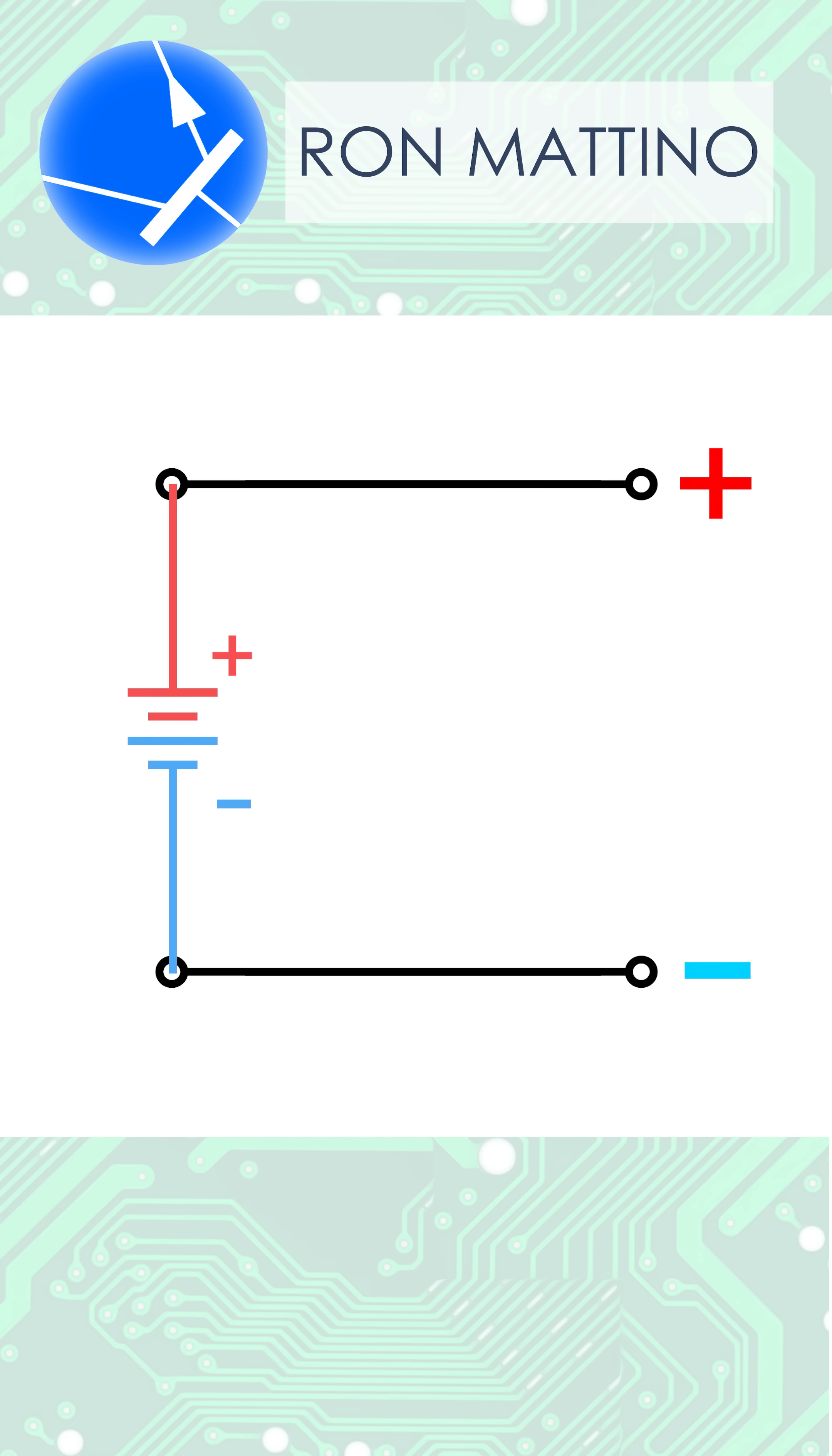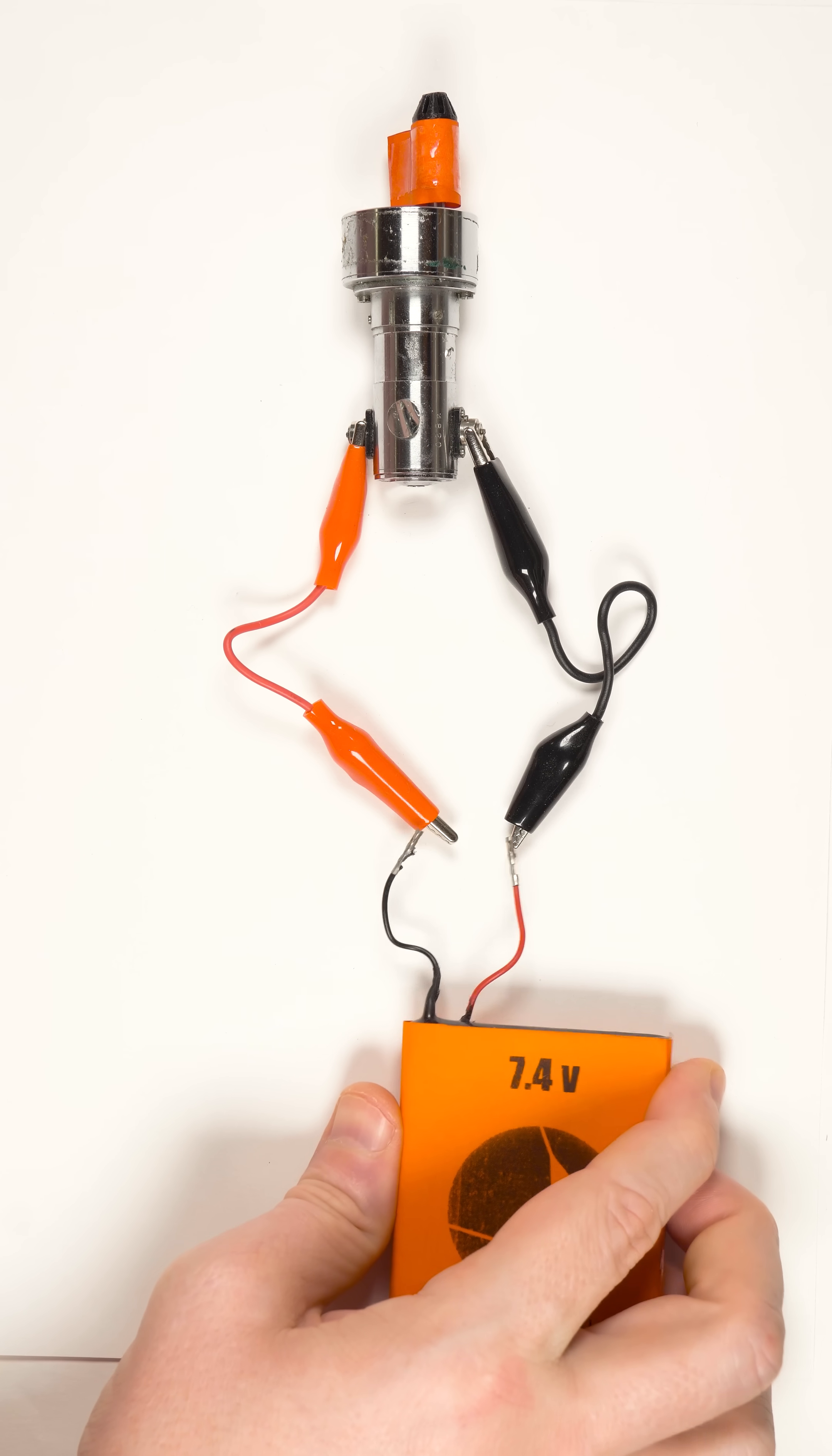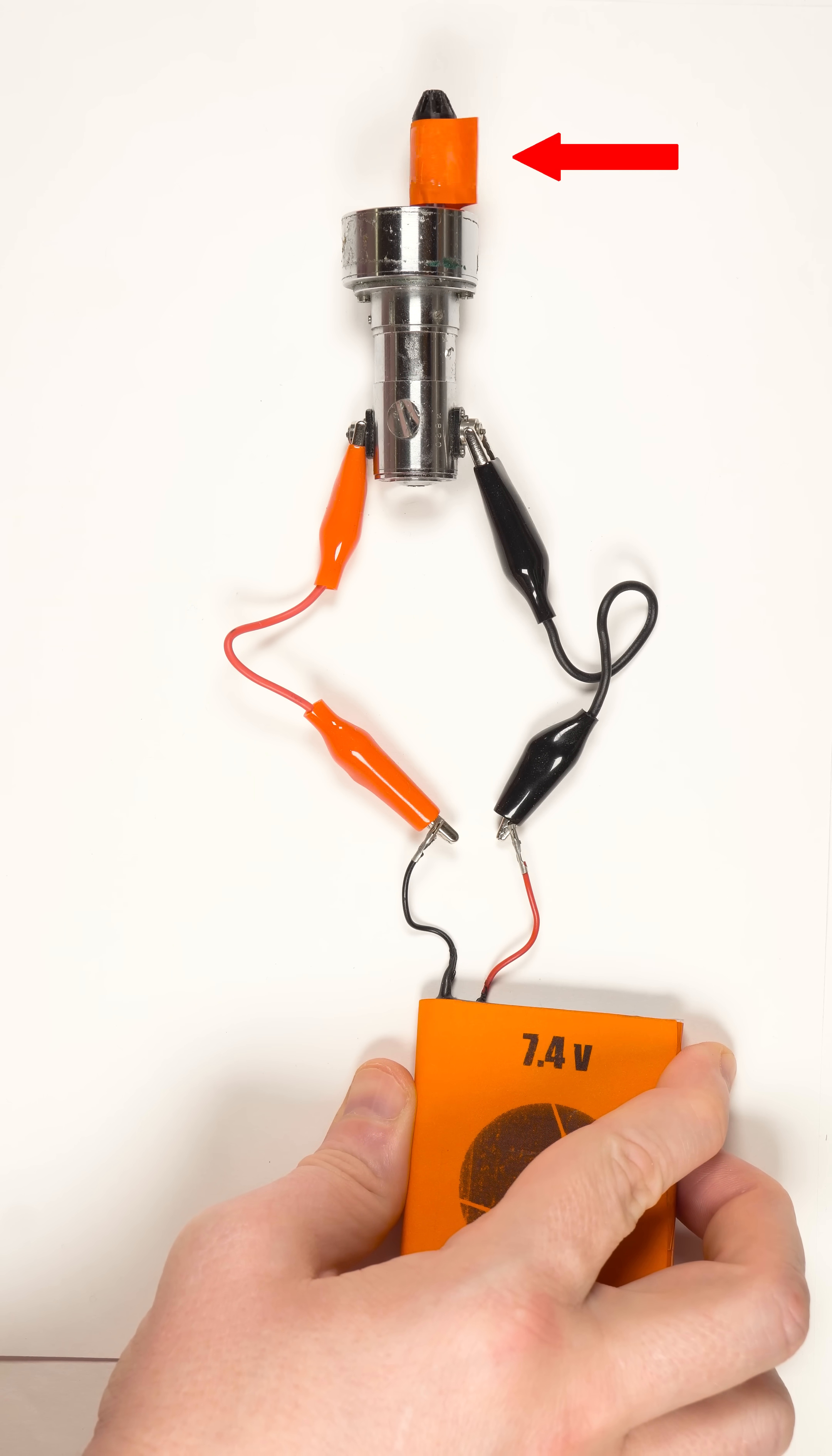We can imitate AC by manually swapping the positive and negative terminals of a DC source. The motor changes direction every time I turn the battery over.